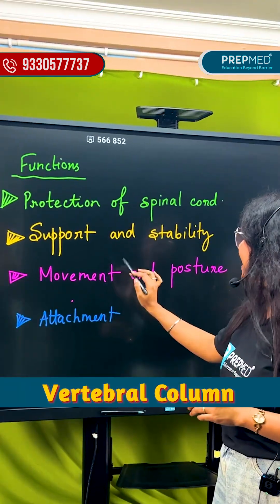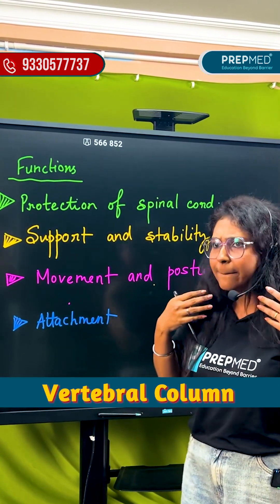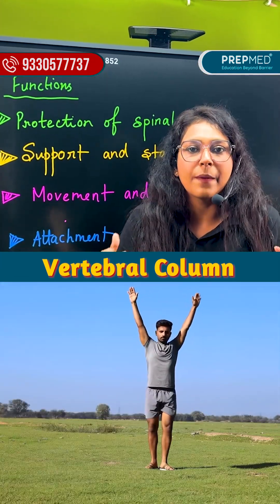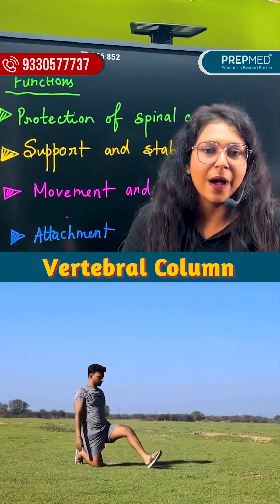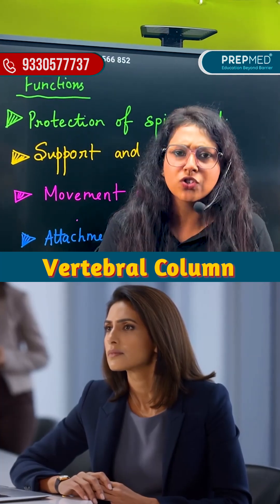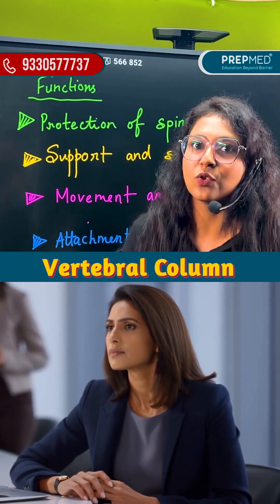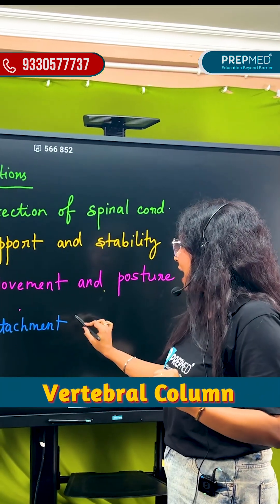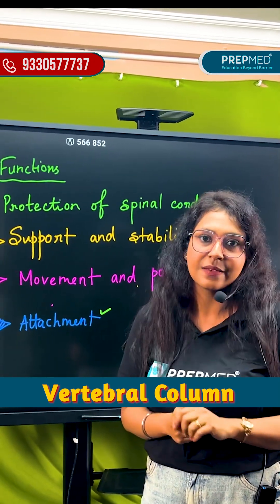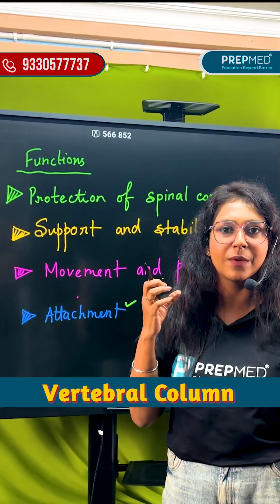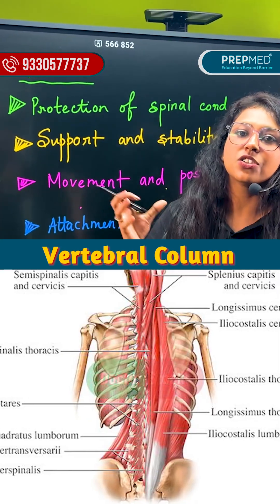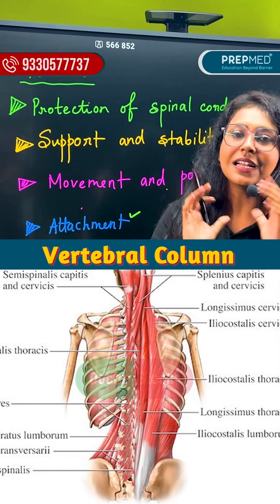Next, placement and posture. When we move, the vertebral column helps us maintain a steady posture. And last, the attachment of muscles. Whatever the muscles — whether in the thoracic region or abdominal region — they are attached to the vertebral column.